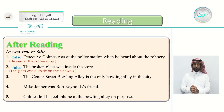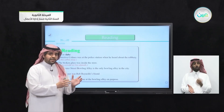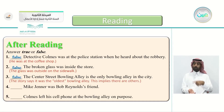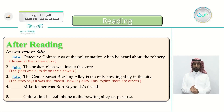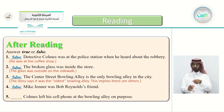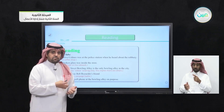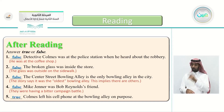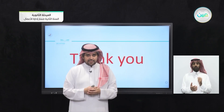Number three: the Center Street bowling alley is the only bowling alley in the city — false. The story says it was the oldest bowling alley, and 'oldest' implies there are others. Number four: Mike Jenner was Bob Reynolds's friend — false. They were having a bitter campaign battle. Number five: Combs left his cell phone at the bowling alley on purpose — true. He left it to bait Mr. Jenner. And with that we reach the end of this lesson. See you next lesson inshallah. Subhanaka Allahumma bihamdik, ashhadu alla ilaha illa anta, astaghfiruka wa atubu ilayk. As-salamu alaykum.